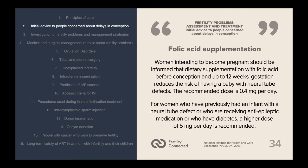Folic acid supplementation is a widespread topic in conception and pregnancy. Women intending to become pregnant should be informed that dietary supplementation with folic acid before conception and up to 12 weeks gestation reduces the risk of having a baby with neural tube defects. The recommended current dose is 0.4 mg per day; however, women who have previously had an infant with a neural tube defect, or who are receiving anti-epileptic medication, or who may have diabetes, are recommended a higher dose of 5 mg per day.